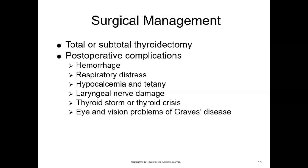In terms of pre-op care, the patient is treated with thionamide drug therapy first to achieve near-normal thyroid function before surgery. Iodine preparations are used to decrease thyroid size and vascularity, reducing the risk for hemorrhage and the potential for thyroid storm during surgery. Hypertension, dysrhythmias, and tachycardia must be controlled before surgery. The goal pre-op is to get thyroid levels and cardiac issues controlled. The patient with hyperthyroidism may need to follow a high-protein, high-carb diet for days or weeks before surgery.